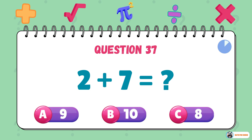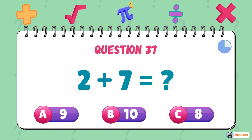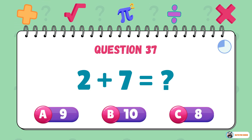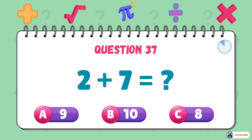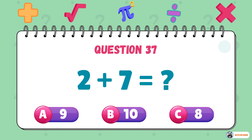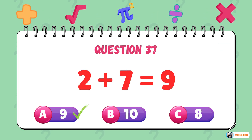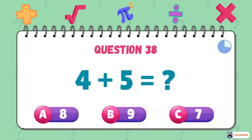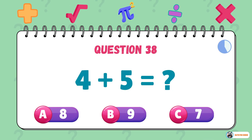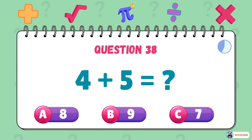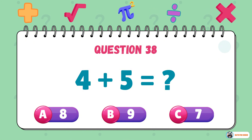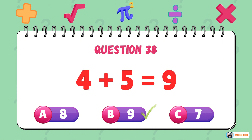What is 2 plus 7? The answer is 9. What is 4 plus 5? The answer is 9.